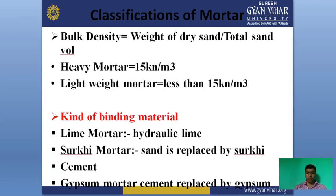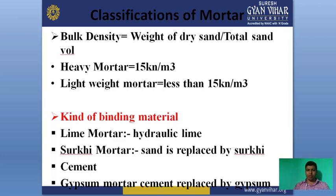Lime mortar is a mixture of lime, sand, and water in appropriate proportion. It is prepared in two ways: grinding and ponding. The grinding method is more efficient than ponding. In the ponding method, lime and sand are mixed in dry state, placed into pits, and then water is added repeatedly poured up and down. The required amount of water is added at equal intervals. When the mortar mass becomes continuous, it is taken out of the pits for use in masonry work.